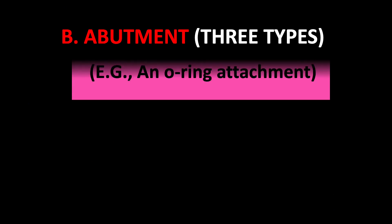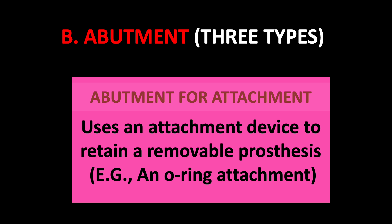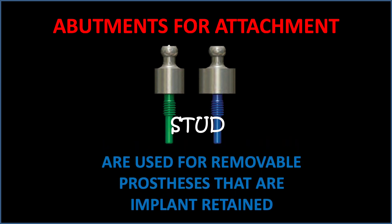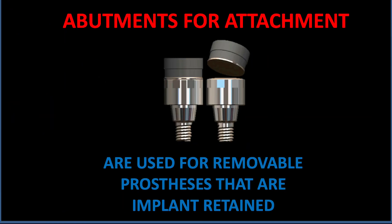The third type is the abutment for attachment, which uses an attachment device to retain a removable prosthesis — such as stud, O-ring, magnets, bar, etc. The stud attachment is used for implant-retained removable prosthesis. Magnets are also used for implant-retained prosthesis, that is overdentures.